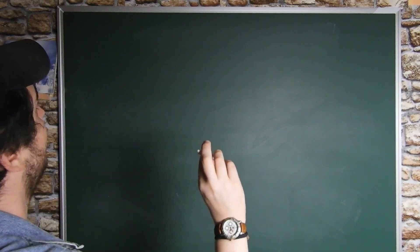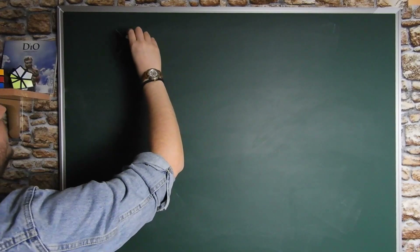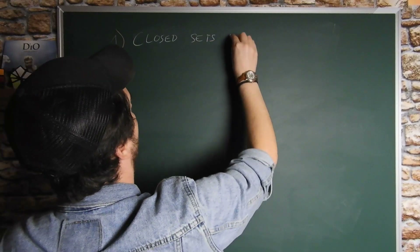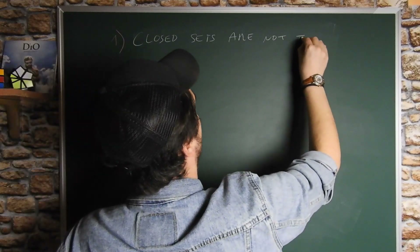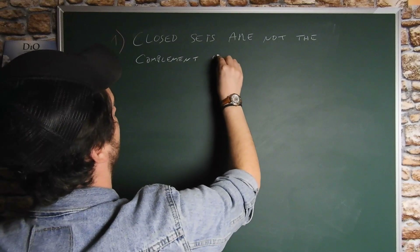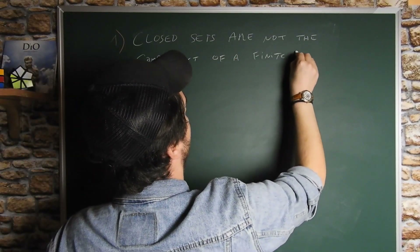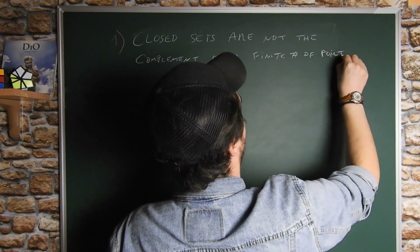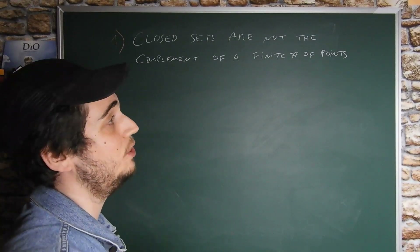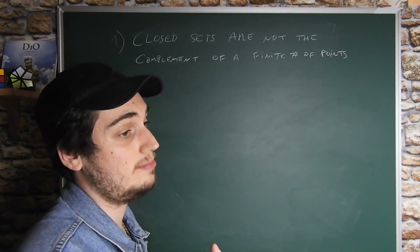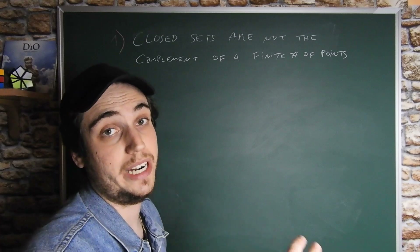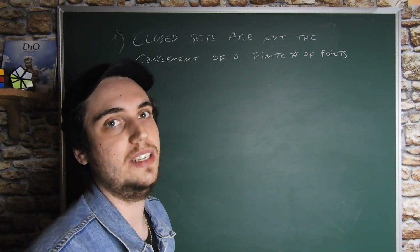We can give two main remarks. The first is that a closed set cannot be the complement of a finite number of points. If a closed set were the complement of a finite number of points, then its complement would be an open set consisting of a finite number of points. But this is impossible, because by construction an open set must contain an arithmetic progression, which is clearly infinite — so an open set cannot be finite.